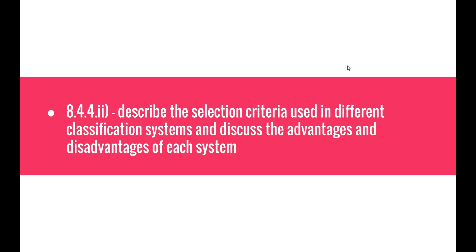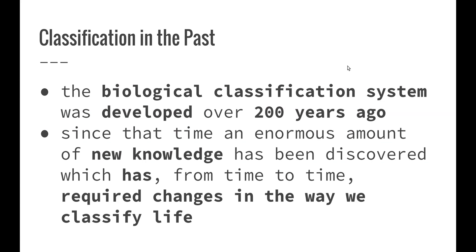Let's look at the second dot point: describe the selection criteria used in different classification systems and discuss the advantages and disadvantages of each. The biological classification system was developed over 200 years ago, and since that time an enormous amount of new knowledge has been discovered, which has from time to time required changes in the way that we classify life.